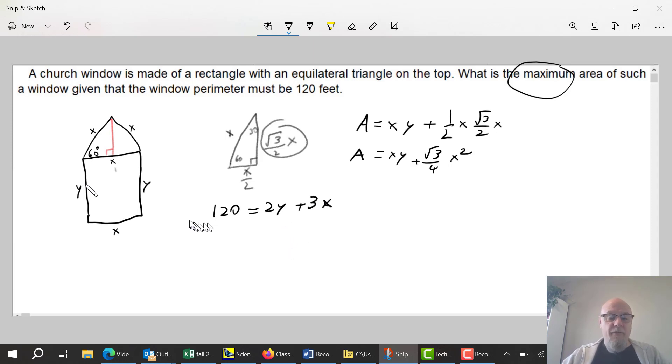We're going to be able to get rid of one of the variables. Let's solve this linking function for Y. So that's going to be 120 minus 3X equals 2Y, and then I'm just going to divide everything by 2, or I could write this as 60 minus 3X over 2.